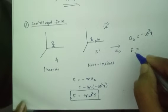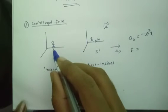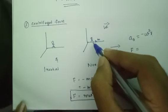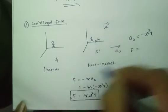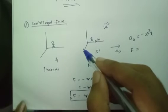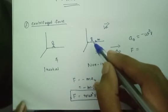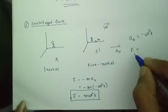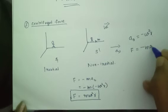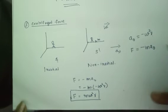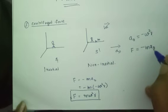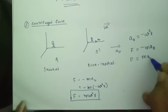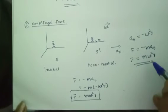This is a pseudo force. Actually it doesn't exist, but the observer feels that there is a force exerted due to the motion of the frame. He feels a pseudo force acting on it. So this centrifugal force is a pseudo force, and we call it minus mA0. If we substitute A0 here, F is the centrifugal force equal to M omega squared R. This is the centrifugal force equation.